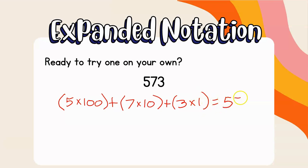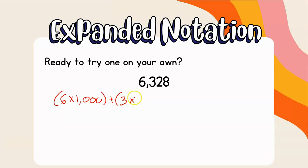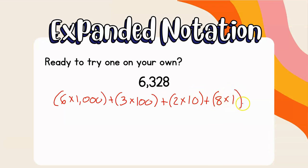Here's another one to try: 6,328. Pause the video, jot down your answer, then unpause to check your work. The answer: 6 is in the thousands place — (6 times 1,000) — plus (3 times 100) because the 3 is in the hundreds place, plus (2 times 10) because 2 is in the tens place, plus (8 times 1) because the 8 is in the ones place, equals 6,328.